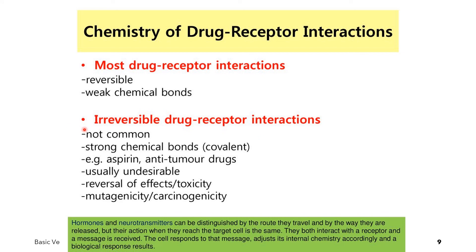We also have irreversible drug interactions. This is not common and involves a covalent bond — a strong chemical bond between the drug and the receptor. Examples of drugs that exhibit a strong covalent bond are aspirin and the antitumor drugs. The clinical significance of irreversible binding is that it can cause undesirable effects, such as reversal of the drug's effects, or toxicity, mutagenicity, or carcinogenicity.